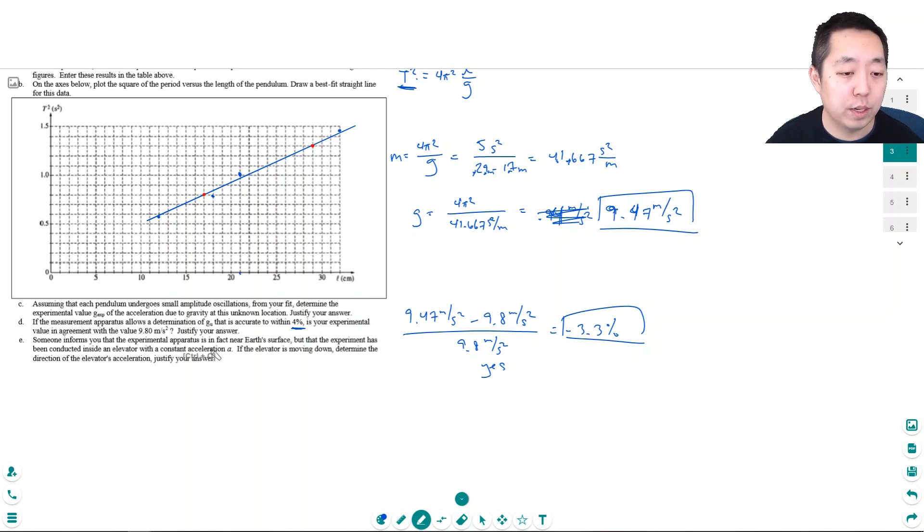Someone informs you the experiment is near Earth's surface, but has been conducted inside an elevator with constant acceleration A. If the elevator is moving down, determine the direction of the elevator's acceleration and justify your answer. This wasn't really much harmonic motion other than using the period equation. So we're saying the difference between these two accelerations—let me draw a picture. I have the apparatus moving down at constant acceleration A.